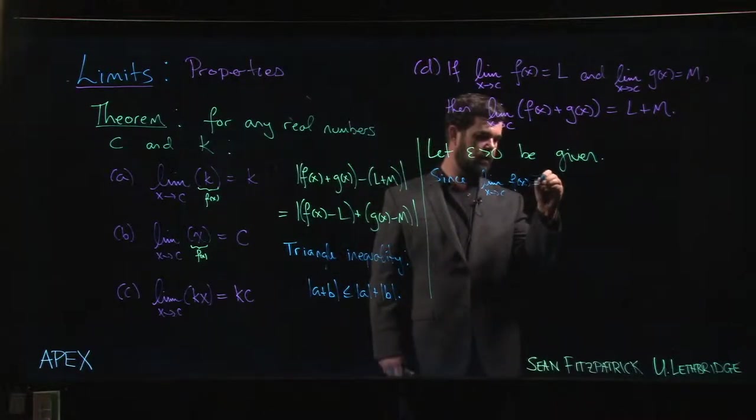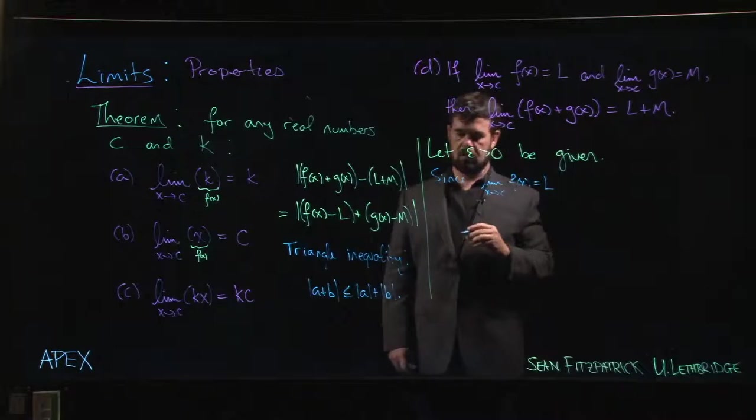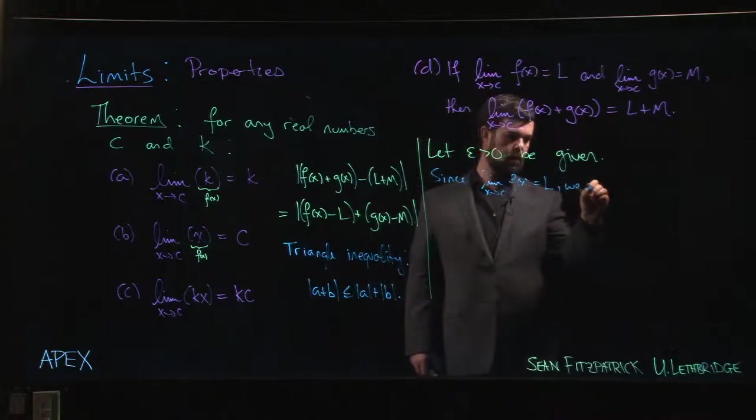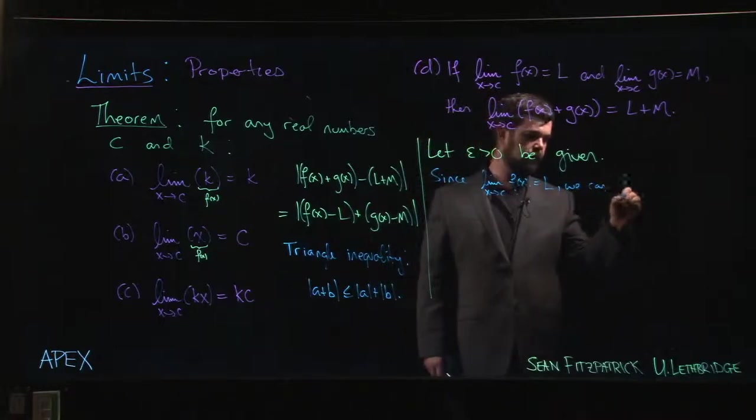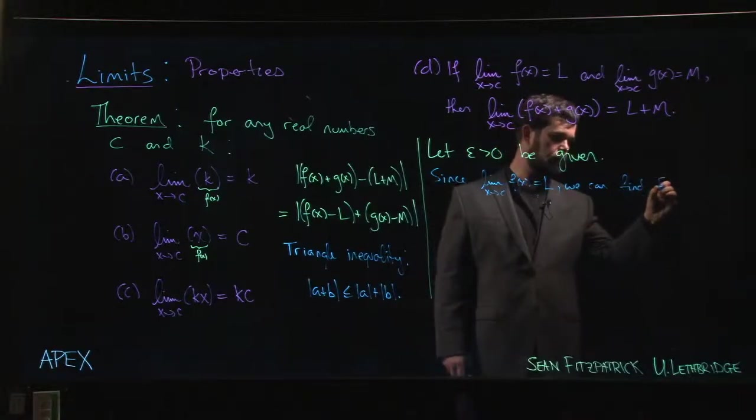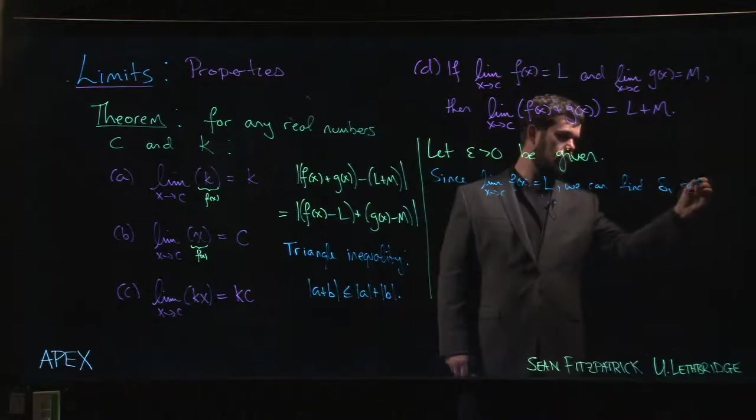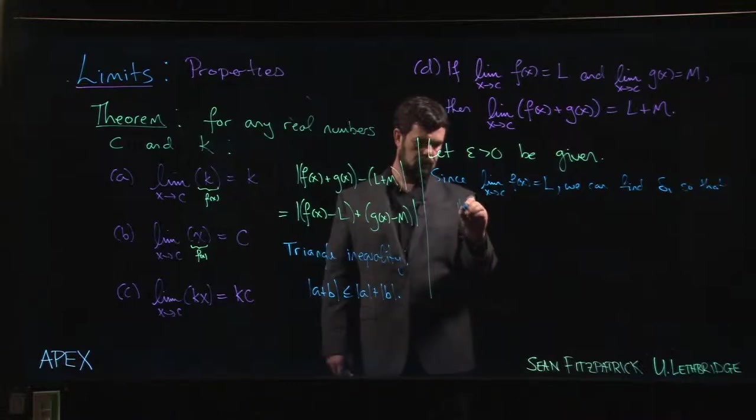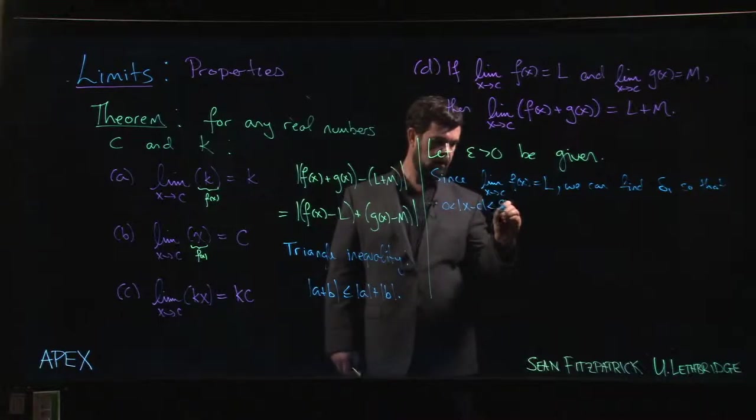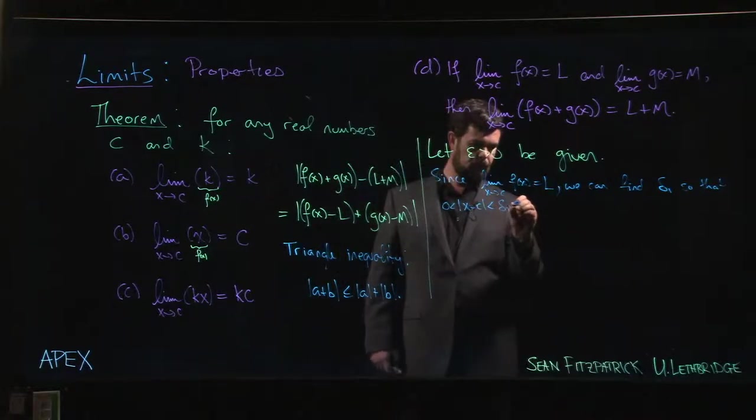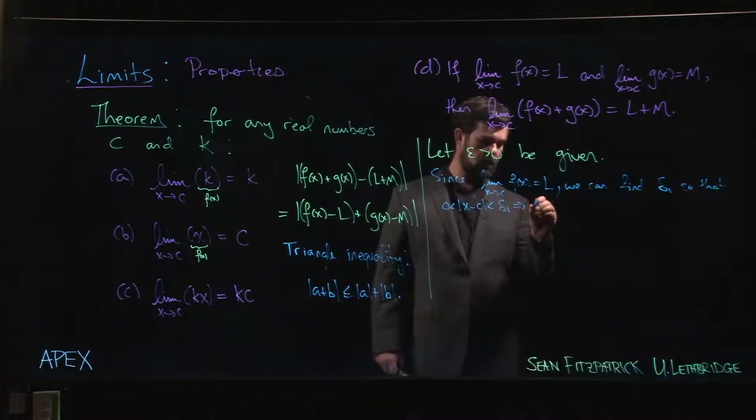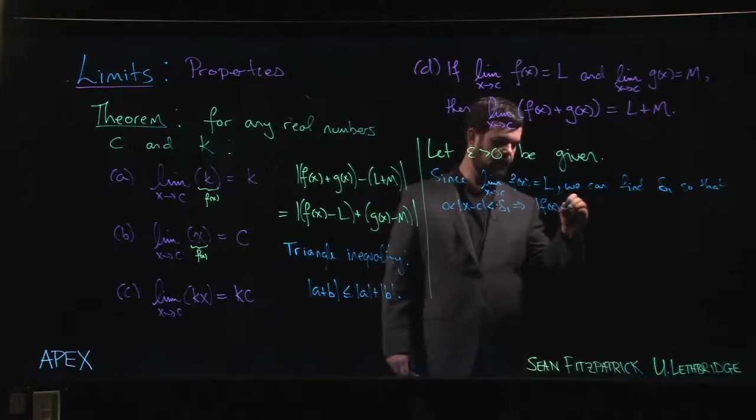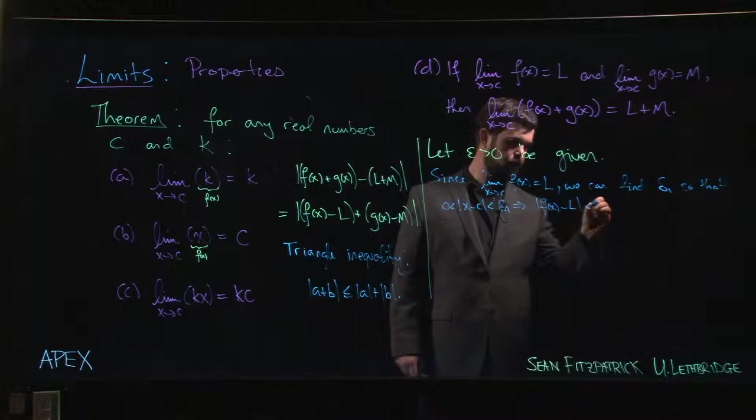So that if 0 < |x - c| < delta_1, the absolute value of f(x) - L is less than epsilon.